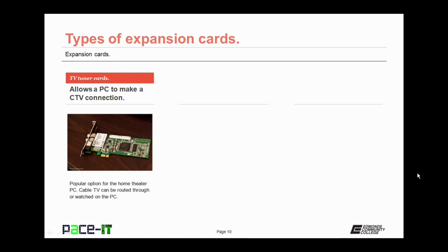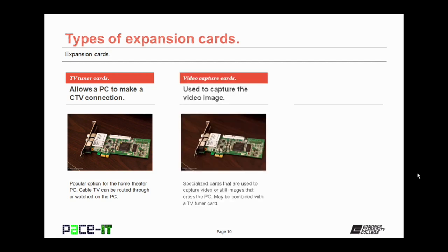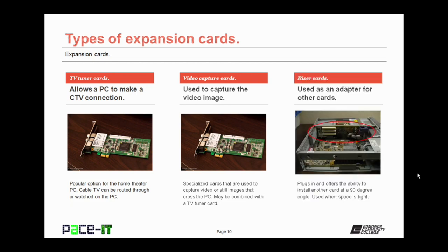A TV Tuner Card allows a PC to make a cable television connection. This is a popular option for the home theater PC, where cable television can be routed through or watched on the PC. Video Capture Cards are used to capture video images — specialized cards capture video and/or still images that pass through the PC, and they may be combined with a TV Tuner Card.